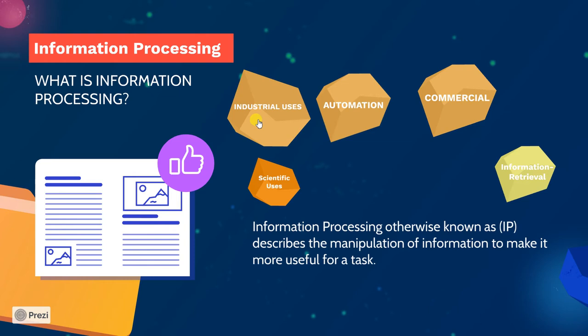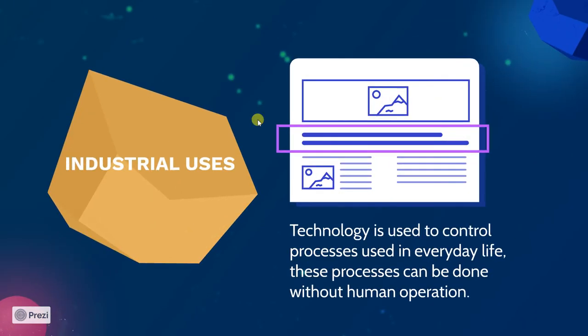Industrial uses: computers are used to control processes used in everyday life, and these processes can be done without human operation. There are some tasks that human beings are not able to do accurately, or even if they are able to do them, they are not able to do them effectively without going through a lot of painstaking routines.